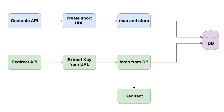We are going to create a very basic URL shortener. It will have two APIs: one is a POST request which will generate a short URL, and another is a GET request which will redirect whatever tiny URL we have created.